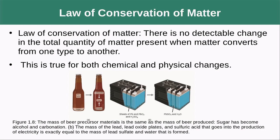This brings us to the law of conservation of matter, which states that there is no detectable change in the total quantity of matter present when matter converts from one type to another. This is true for both chemical and physical changes. For example, with fermenting beer in a closed system, yeast converts sugar over to ethanol, but if you weigh the bottle before and after, even though it now contains different things, it's going to have the same amount of mass.